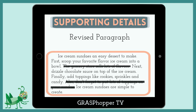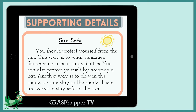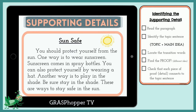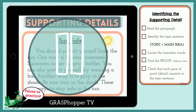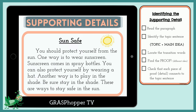Now we have a revised paragraph with only new and on-topic supporting details. Now it's your turn. Read the paragraph and use the checklist to find the supporting details. Remove any details that have off-topic or repeated information. You can pause the video to practice. Let's check your work. Did you use the checklist? If yes, did you find these three supporting details? Also, did you remove these two details?